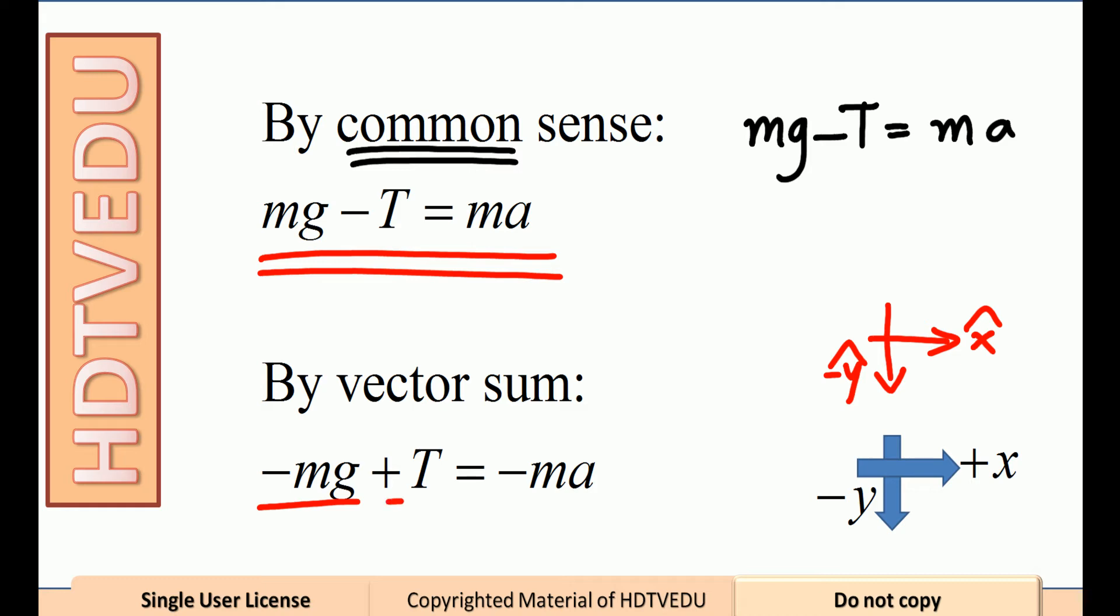Tension always acts vertically up. For our case, yes. And what is the direction of acceleration? It is down, so we put negative ma.